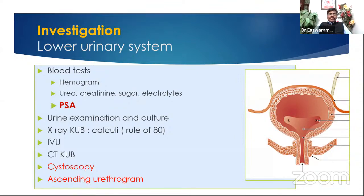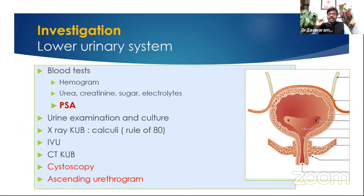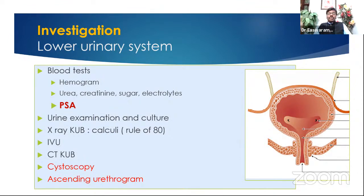One important blood test for lower urinary disease is the tumor marker PSA — prostate-specific antigen. Less than 5 is normal, 5 to 10 is borderline, above 10 is significant. Patients with raised PSA and a hard nodular prostate on rectal examination should undergo a true-cut biopsy — ultrasound-guided, taking a small core of tissue from the prostate. If it proves to be prostate cancer, decide on treatment. Prostate cancer can spread via the bloodstream to vertebrae, so a bone scan is needed in patients with raised PSA.